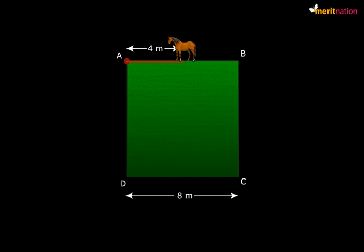Now look at the figure again. The horse can graze any part of this region, region AMN. And region AMN is nothing but the sector of a circle. So to calculate the required area, we first need to understand how to calculate the area of a sector.